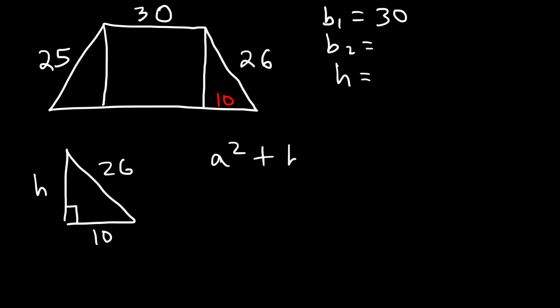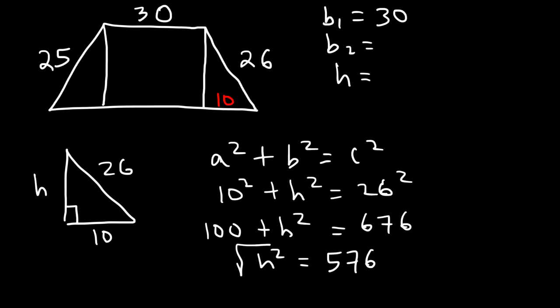So A² + B² = C². Let's say A is 10, B is the height, and C is 26. 26 squared is 676. 10 squared is 100. So to find h², we need to subtract 676 by 100, which is 576. And now we need to take the square root of both sides. The square root of 576 is 24. So therefore, that's the height of the trapezoid.